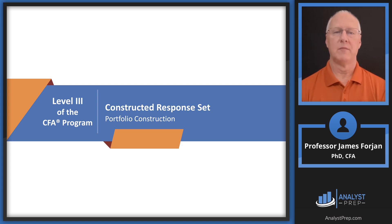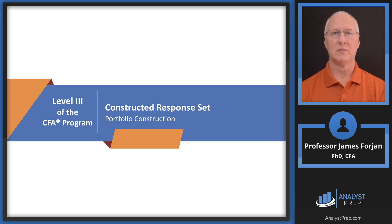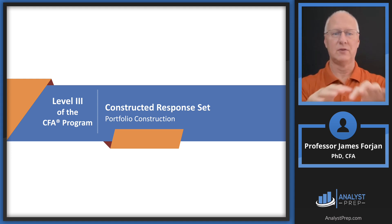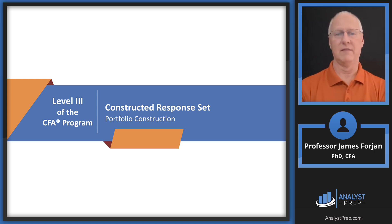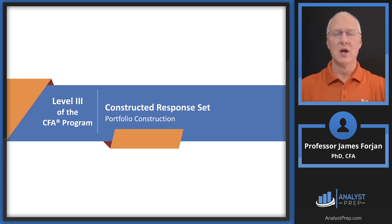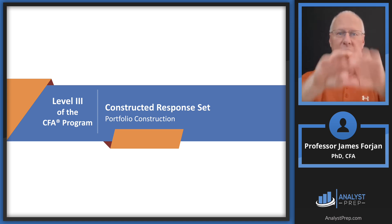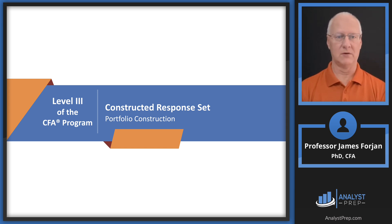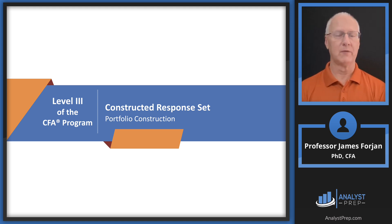Hey, it's Jim and this is Level 3 of the CFA program, a constructed response set on the topic of portfolio construction. We can do security selection essentially one of two ways: top-down, where we start with the entire economy and work down to individual industries to find the best stocks, fixed income, or alternative investments; or bottom-up, where we start with the universe of securities and find the best ones, then look at industries and the economy. Either way, we squeeze the universe down to a portfolio appropriate for our client.